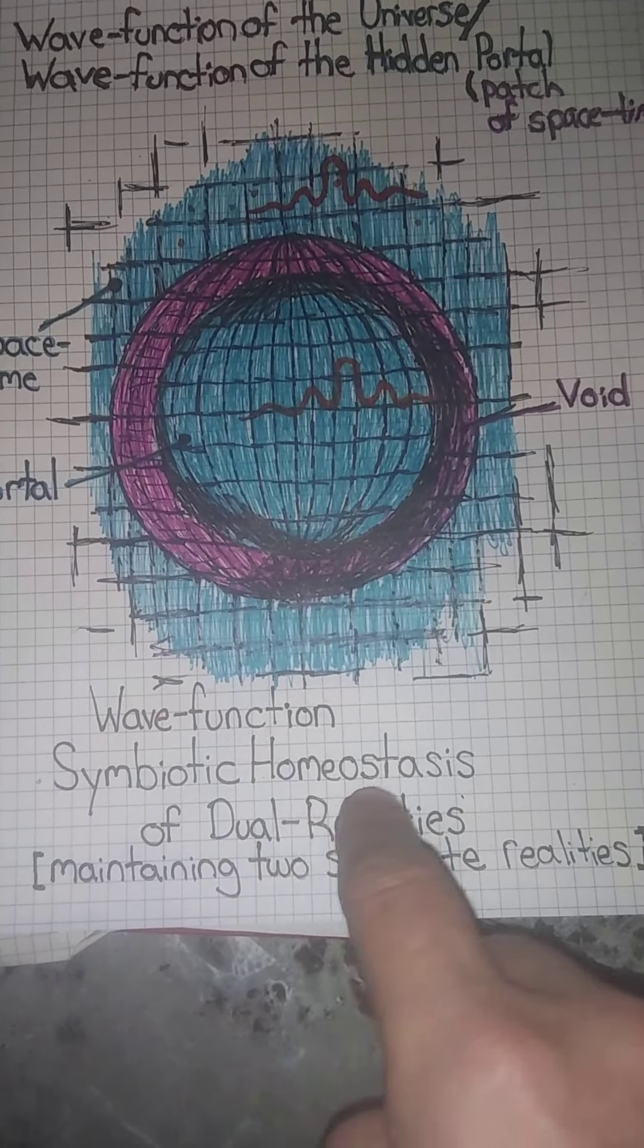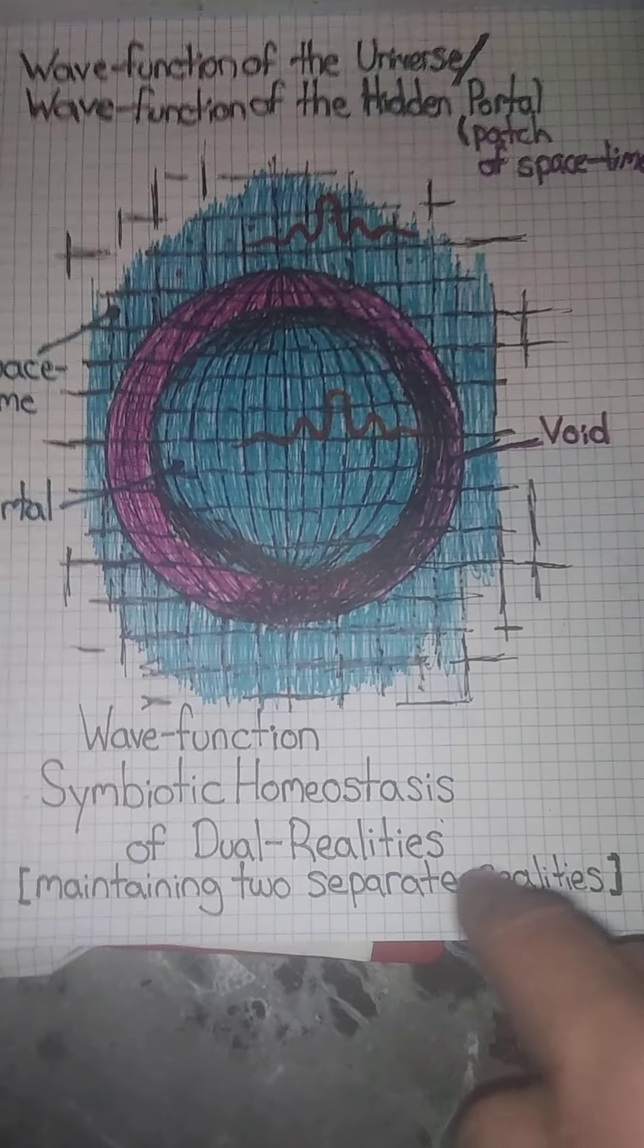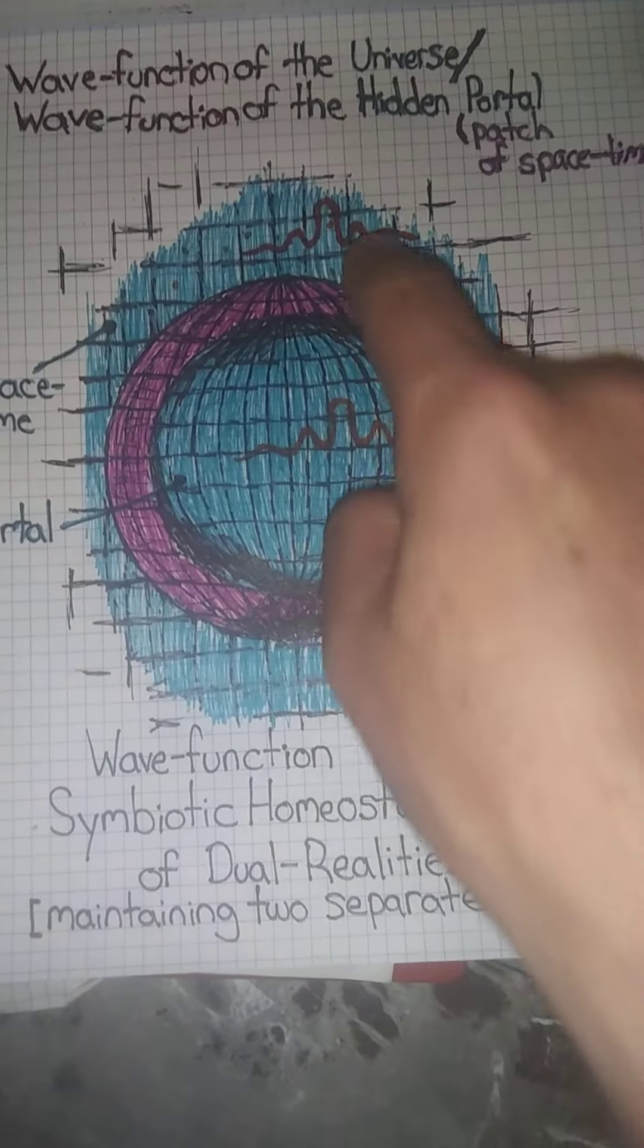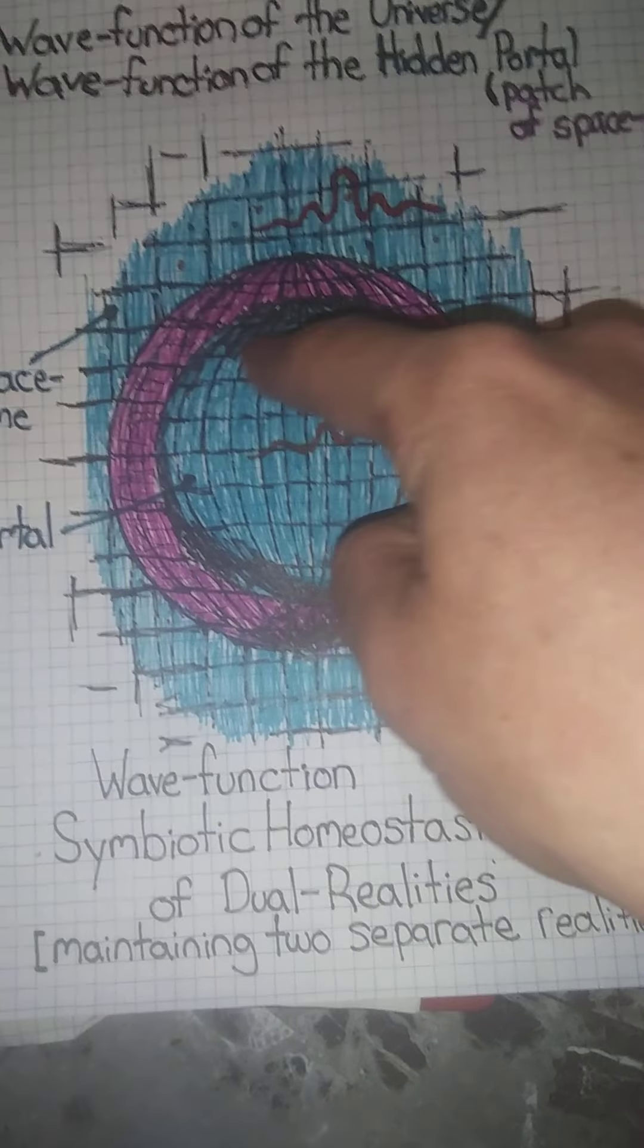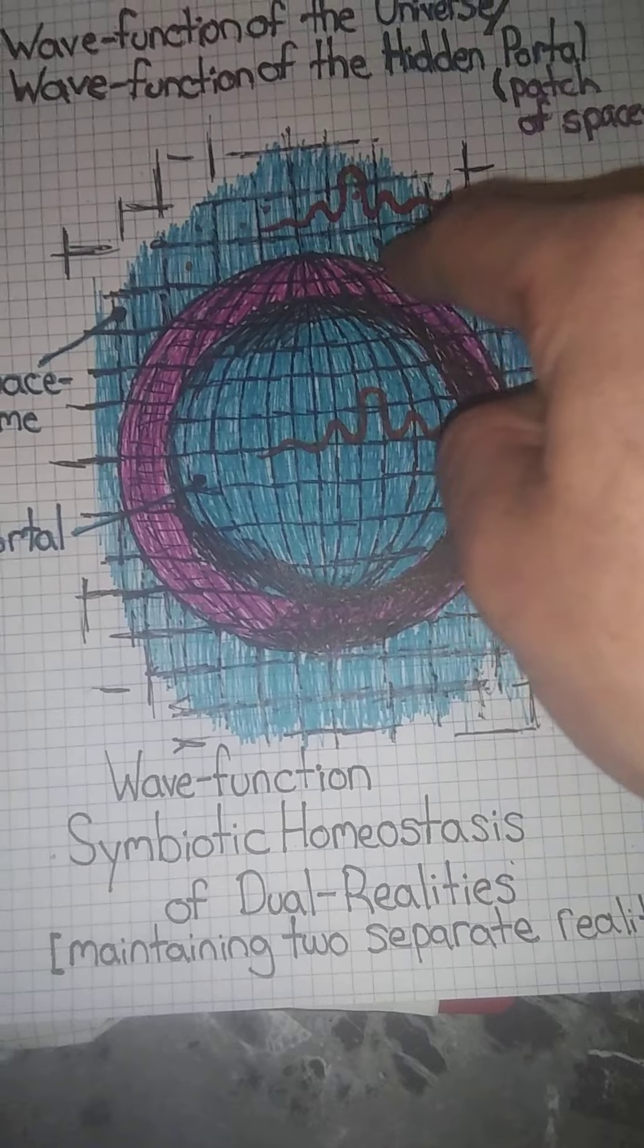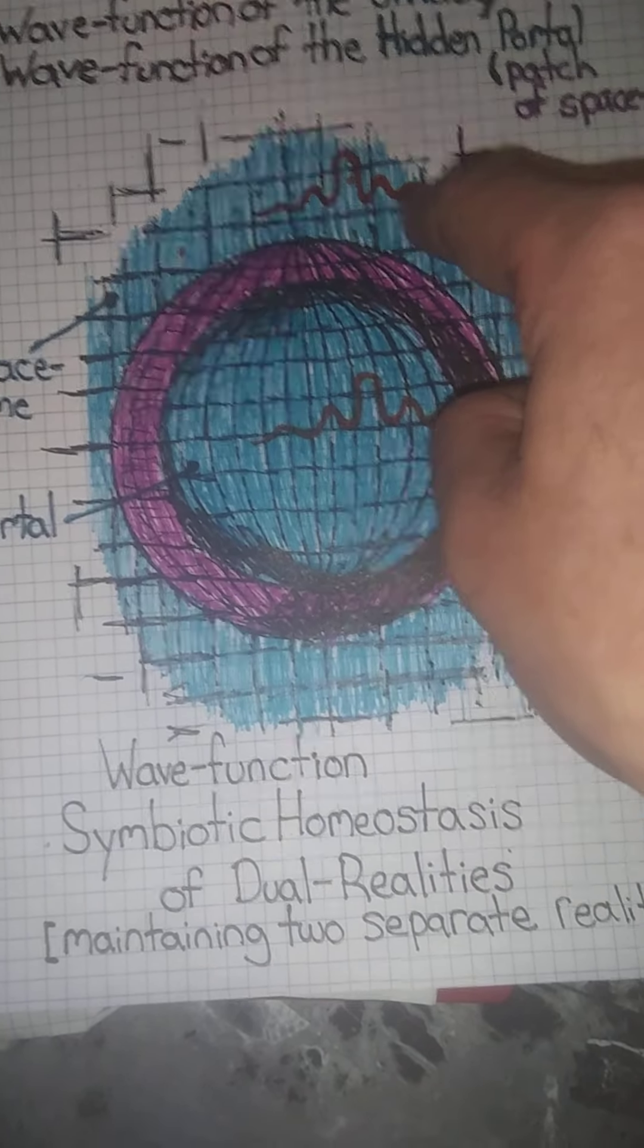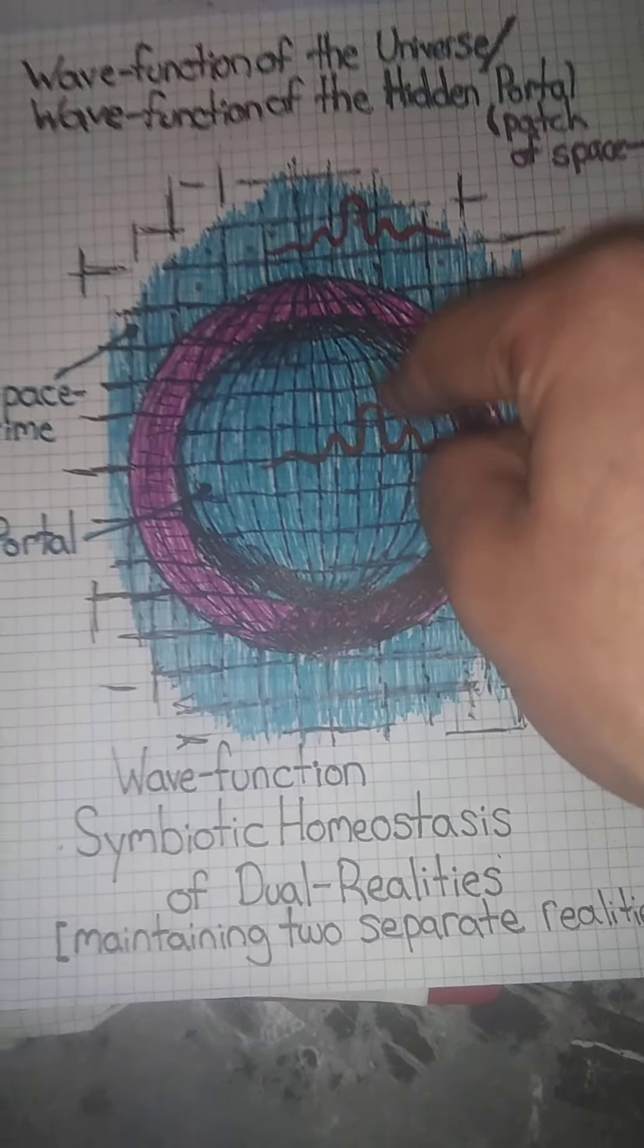I call it a wave function symbiotic homeostasis of dual realities maintaining two separate realities. That's a homeostasis symbiotic because I have the idea that this inner reality wave function reinforces this outer reality wave function, and this outer reality wave function reinforces inner reality wave function.